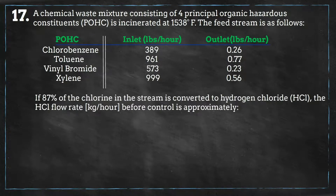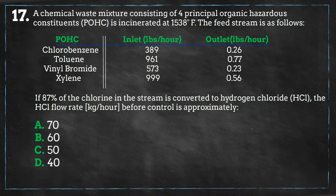If 87% of the chlorine in the feed is converted to hydrogen chloride, the hydrogen chloride flow rate before control is approximately: A) 70, B) 60, C) 50, or D) 40.